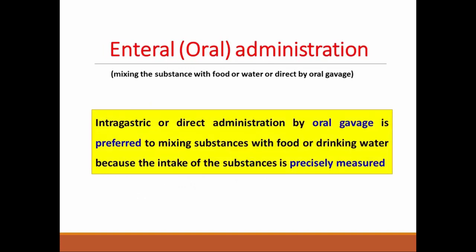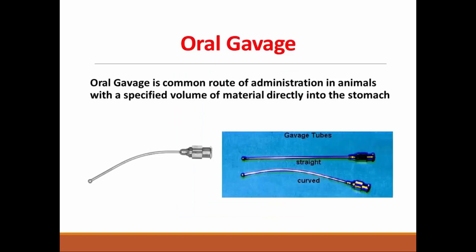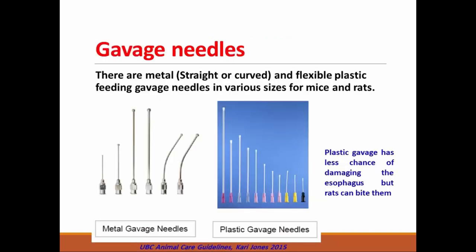Intragastric or direct administration by oral gavage is preferred over mixing substance with food or drinking water, because by oral gavage the intake of substance is precisely measured. Oral gavage is a common route of administration delivering a specified volume of material directly into the stomach. There are metal straight or curved and flexible plastic feeding gavage needles in various sizes for mice and rats. Metal gavage needles require a well-trained person so as to avoid injury of the esophagus.